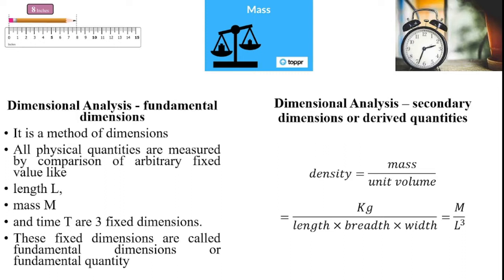Mass gives the dimension as kilogram, represented as capital M. Unit volume can be expressed as length into breadth into width. Mass M is divided by length L times breadth L times width L.